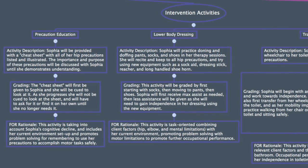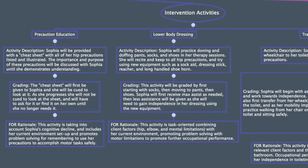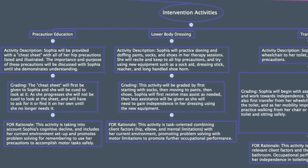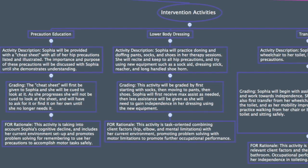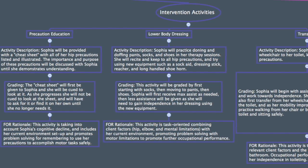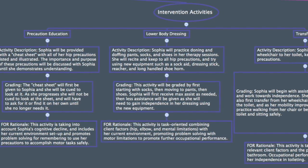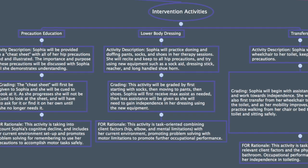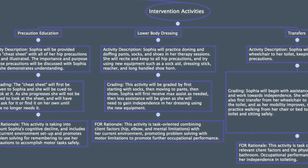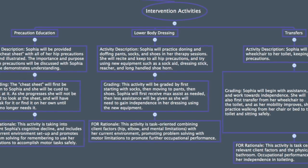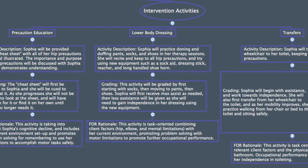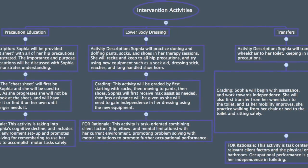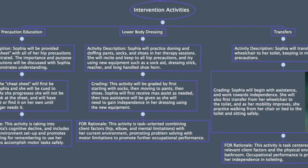Three intervention activities that Sophia will start with in inpatient rehab are precaution education, lower body dressing, and transfers. For precaution education, Sophia will be given a cheat sheet of hip precautions and will be taught the importance and purpose of these precautions. Grading this activity will include first cueing Sophia to look at her cheat sheet, leading to quizzing her on her precautions without any cues, relying on her to remember to use the cheat sheet on her own. The activity takes into account Sophia's cognitive decline, includes her current environment situation, and promotes problem solving, all fitting with a task-oriented frame of reference.